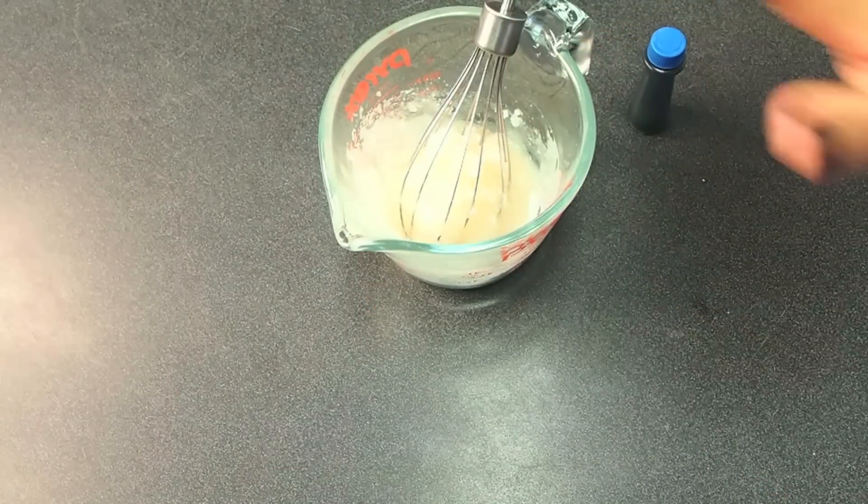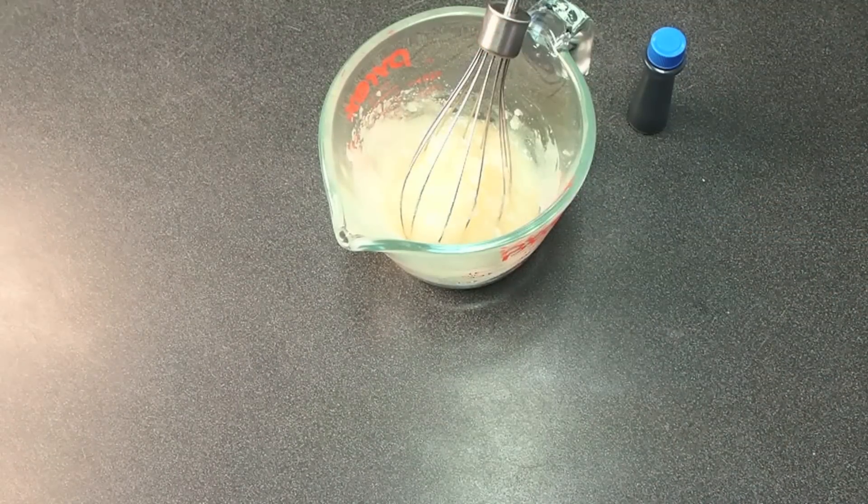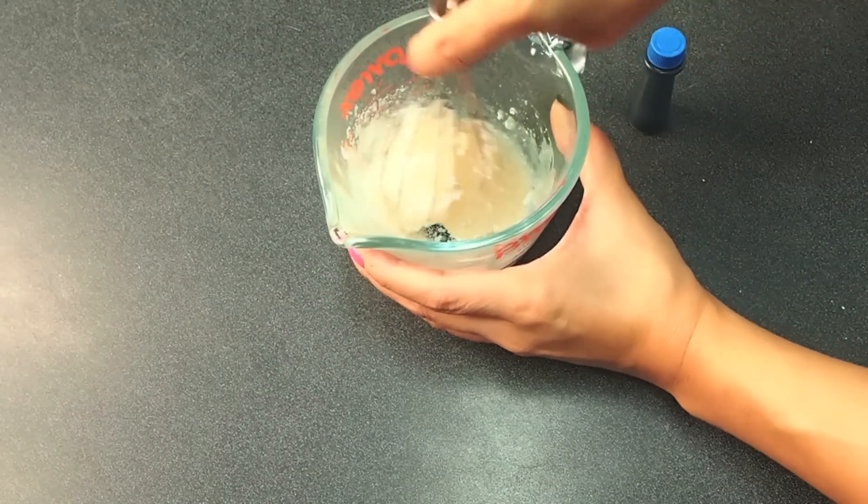When it's all mixed together, you can add in some chili powder. I'm just kidding. But you can add in a little bit of salt to kind of balance out the sweetness from the corn syrup and from the sugar.